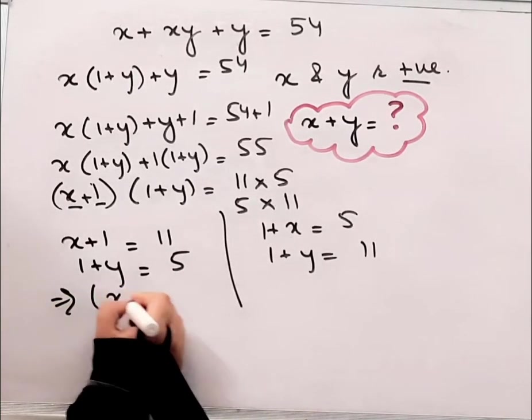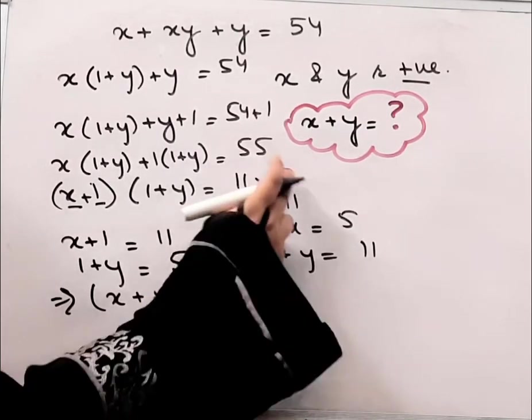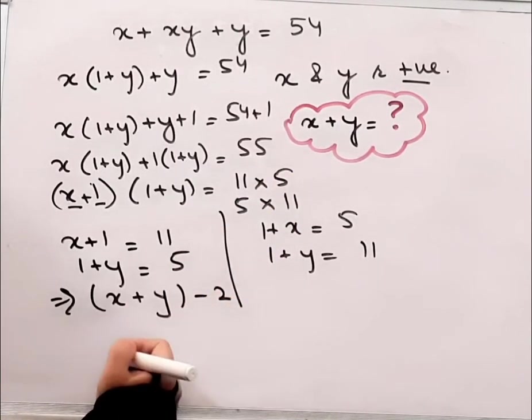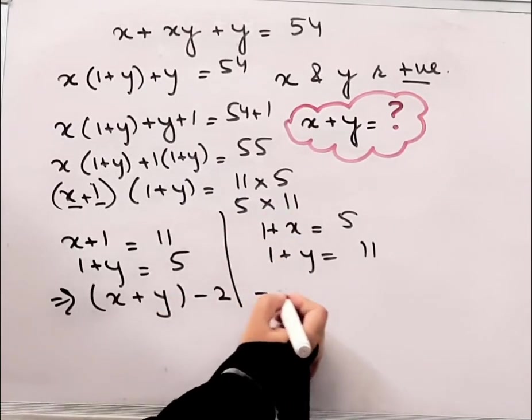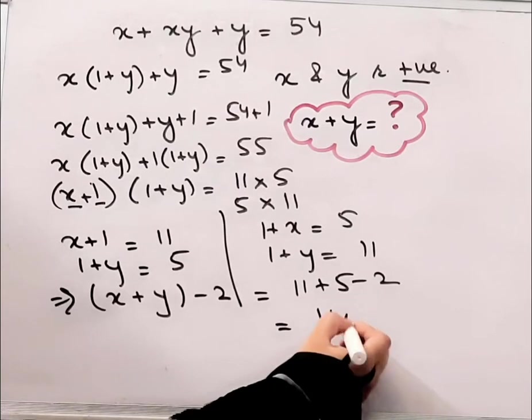In both cases, I can write it as x plus y equals (x plus 1) plus (1 plus y) minus 2. So this will be 11 plus 5 minus 2, you will get the answer as 14.